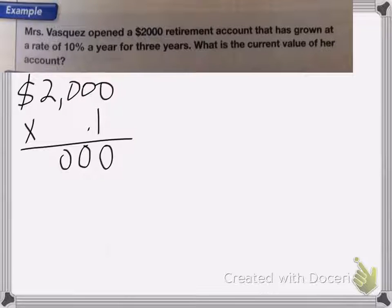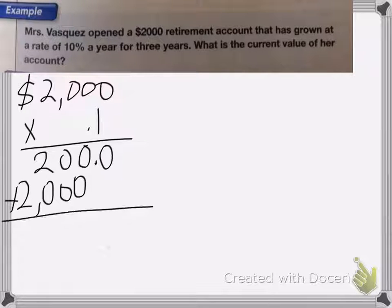Multiply that out, move the decimal point in. So she earned $200 the first year. Now to figure out the total amount she had, I need to add that to the original $2,000 she started with. So I end up with $2,200.